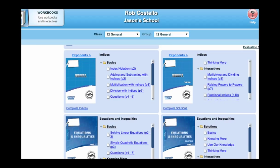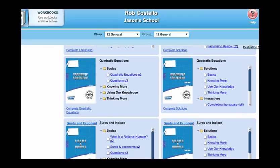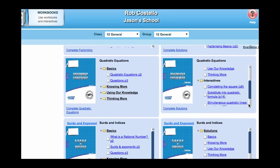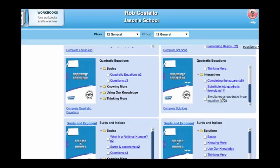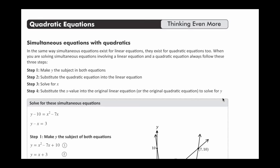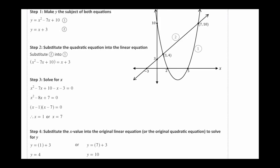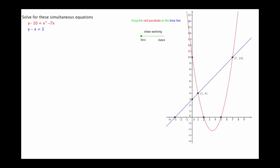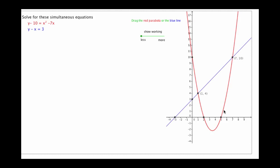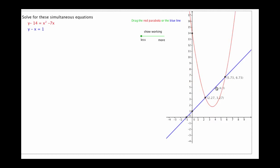And some of them are more graphical than that. So we've got an example here that's a simultaneous quadratic and linear equation where we're trying to find the points of intersection between the parabola and the straight line. And we can change the equations by dragging the graphs around and see the equations change on the left there.